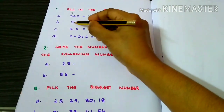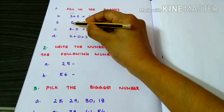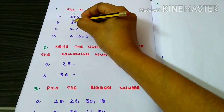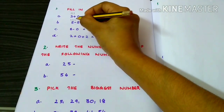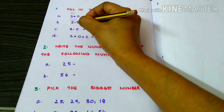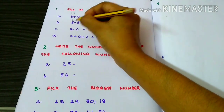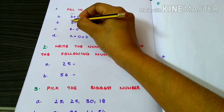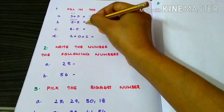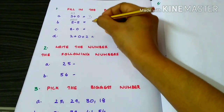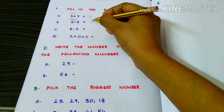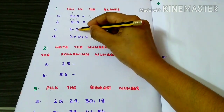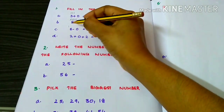5 minus 5. Counting 1 through 5. The answer is 0. Now, 8 minus 0.